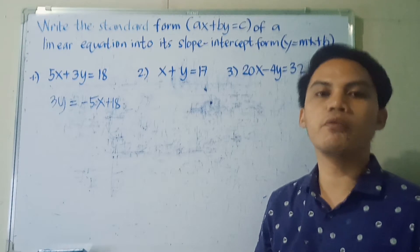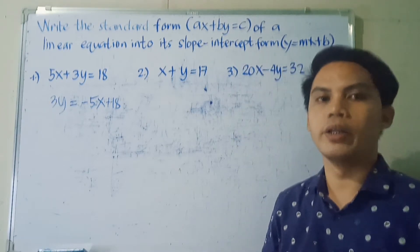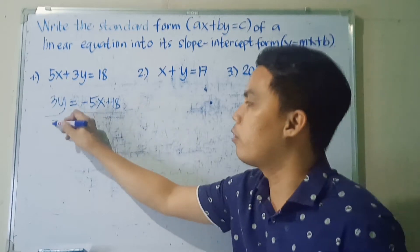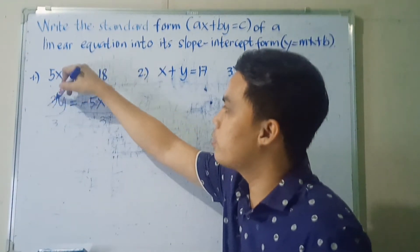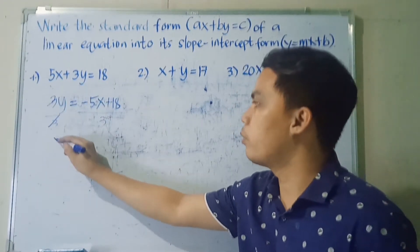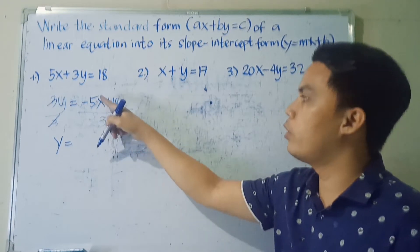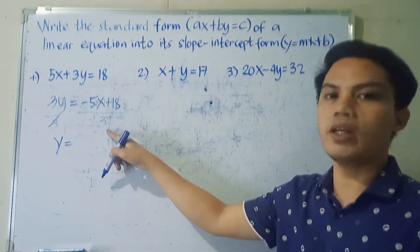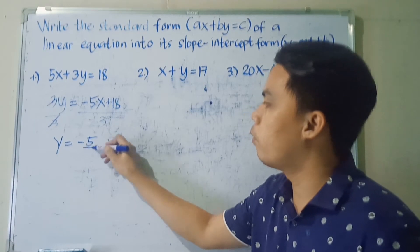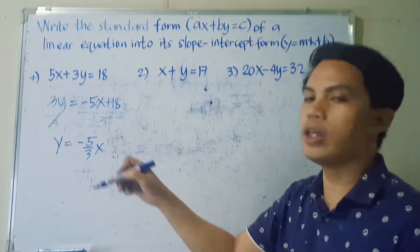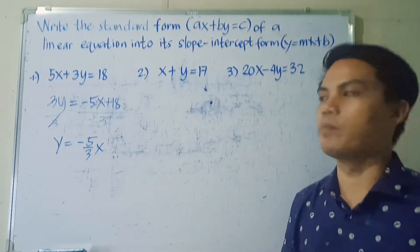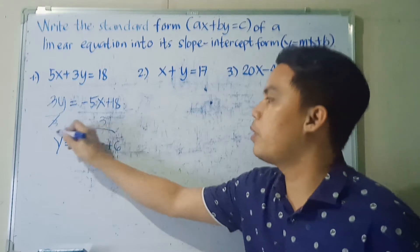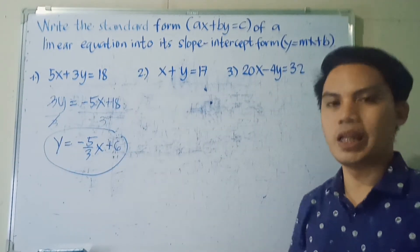Since 5X is positive, after transposing it becomes negative 5X, then bring down the constant term 18. Next, we make sure the numerical coefficient of Y is equal to positive 1, so we need to get rid of 3 by dividing both sides by 3. The 3 cancels out, leaving Y on the left side. On the right side, negative 5X divided by 3 gives negative 5 over 3 times X, and 18 divided by 3 gives positive 6. So the slope-intercept form is Y equals negative 5/3 X plus 6.